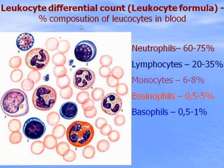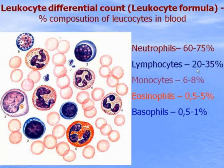Leukocyte differential count — the leukocyte formula — is the percent composition of leukocytes in blood. The most numerous are neutrophils, between 60 and 75 percent. Second place — lymphocytes, between 20 and 35 percent. Then monocytes, 6 to 8 percent. Eosinophils between 0.5 and 5 percent. And the least numerous — basophils, between 0.5 and 1 percent.